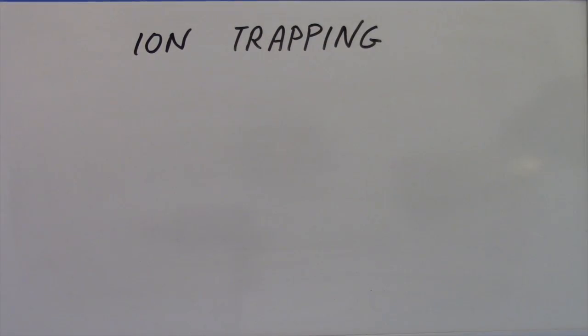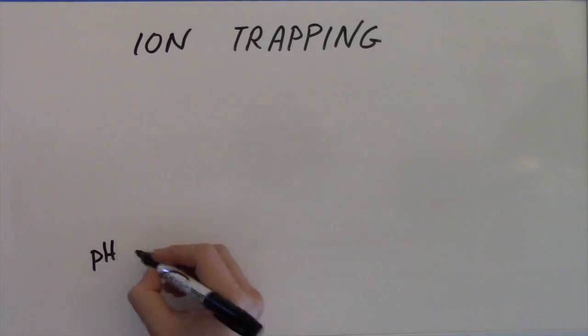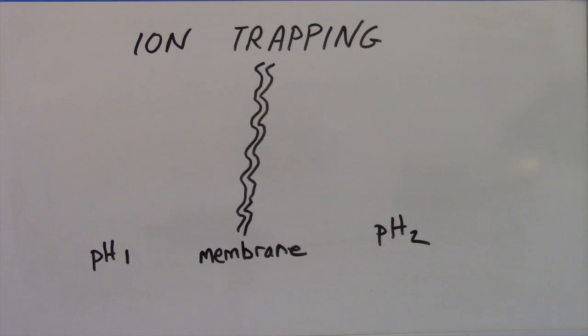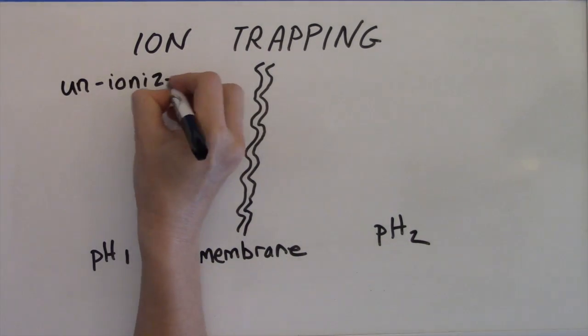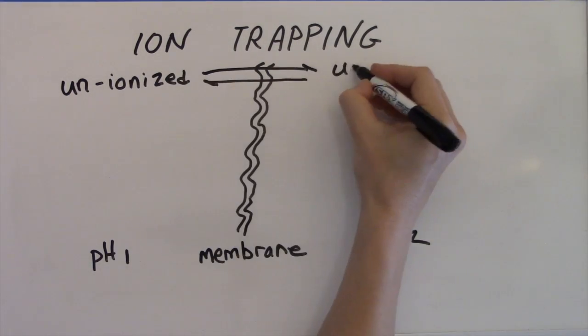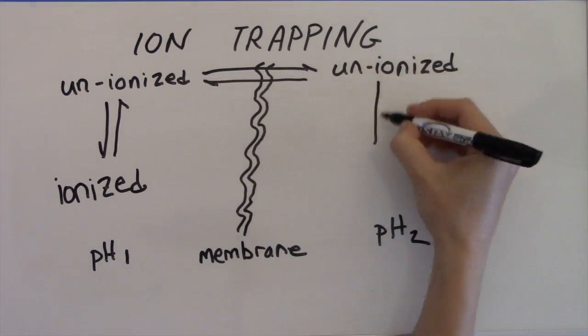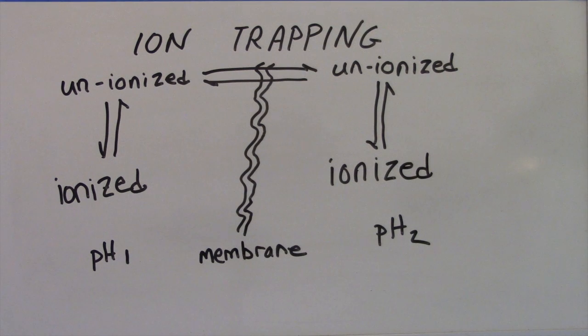Ion trapping occurs when two compartments are separated by layers of plasma membranes. It happens because only unionized drug can pass through cell membranes, but different pHs on either side of the membrane dictate that more of the drug will be ionized on one side than another.